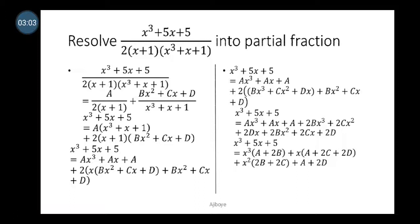We expand and collect like terms. We have Ax³ + Ax + A plus 2(Bx³ + Cx² + Dx) plus 2(Bx² + Cx + D), because we use x to multiply that bracket. Opening the bracket by 2 gives: Ax² + Ax + A + 2Bx³ + 2Cx² + 2Dx + 2Bx² + 2Cx + 2D. We then collect like terms.